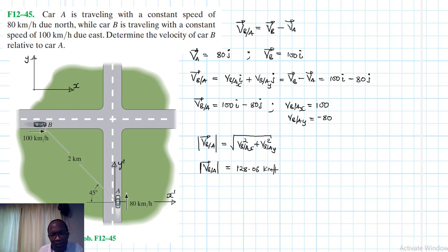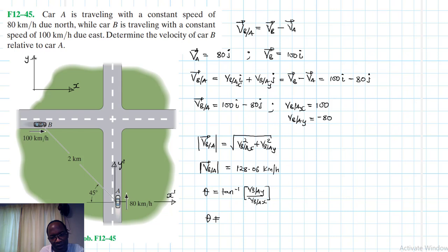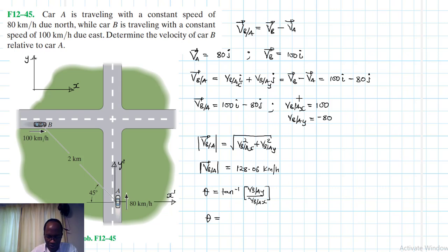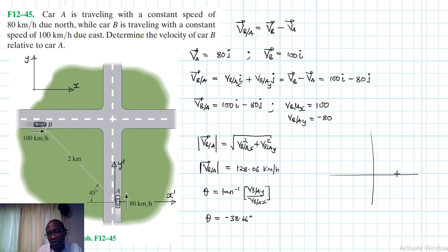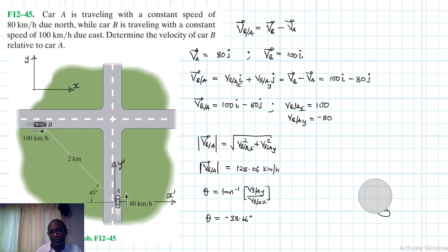Now let's find the direction. Theta equals the inverse tangent of V_BAy over V_BAx. Plugging in the values: inverse tangent of minus 80 divided by 100 gives us minus 38.66 degrees. The negative sign indicates the angle is measured clockwise from the horizontal axis.